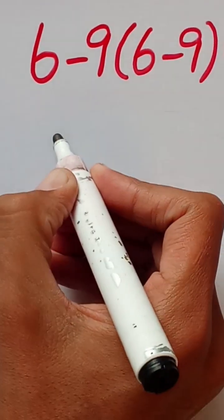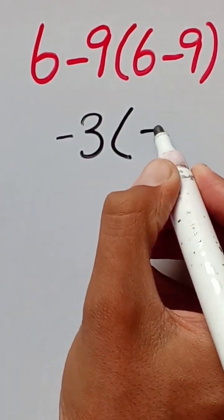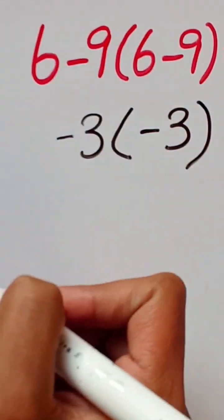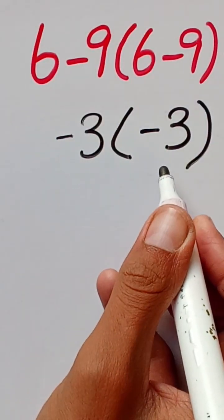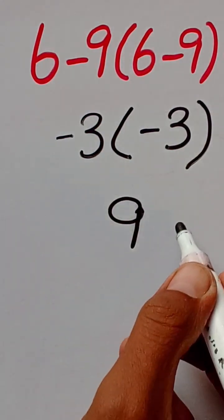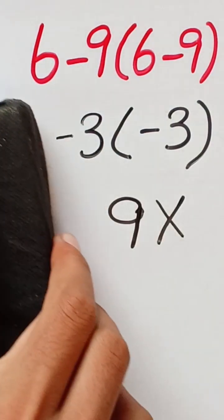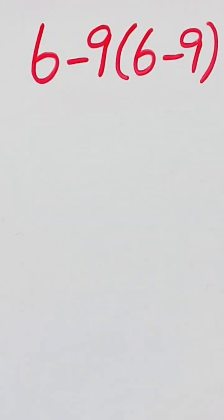6 minus 9 equals negative 3. Then 6 minus 9 again equals negative 3. Negative 3 times negative 3 equals positive 9. But this answer is wrong because of the order of operations, which is called the PEMDAS rule, which says that...